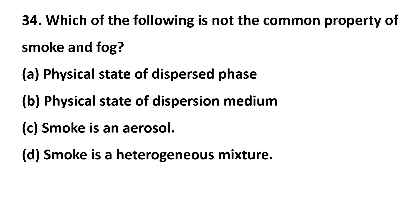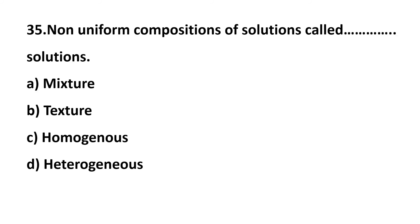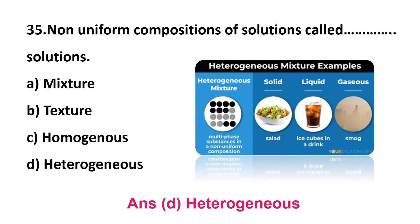Question 34: which of the following is not the common property of smoke and fog — option A: physical state of dispersed phase, option B: physical state of dispersion medium, option C: smoke is an aerosol, option D: smoke is a heterogeneous mixture? The answer is option A: physical state of dispersed phase. Question 35: non-uniform composition of solutions is called — mixture, texture, homogeneous solution, or heterogeneous solution? The answer is heterogeneous solution — it has non-uniform composition.